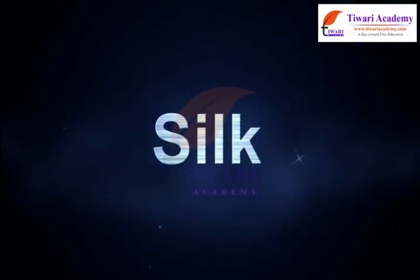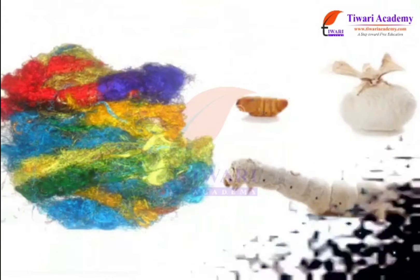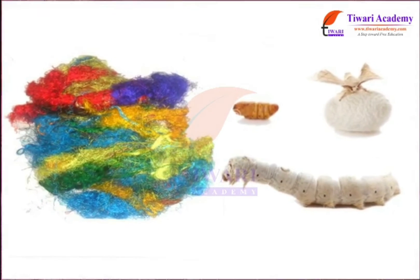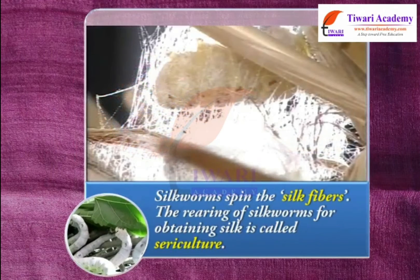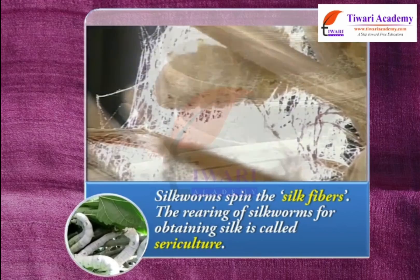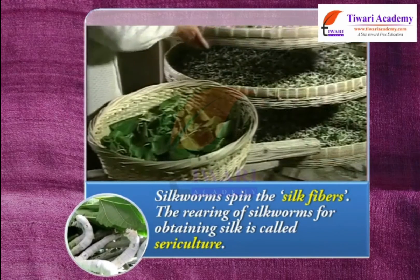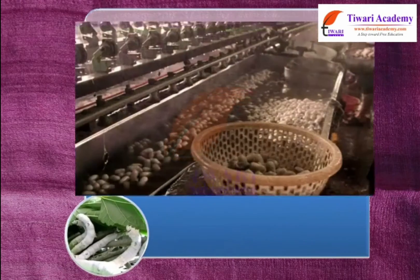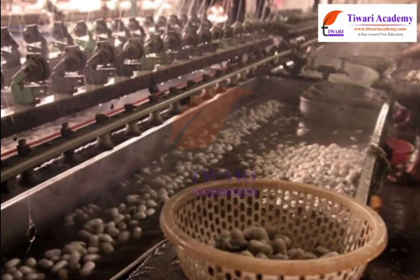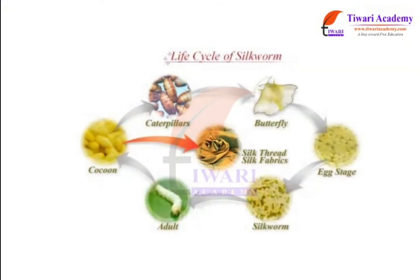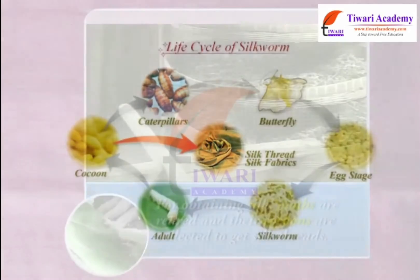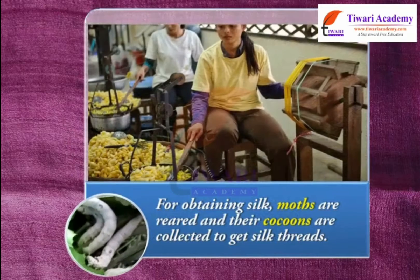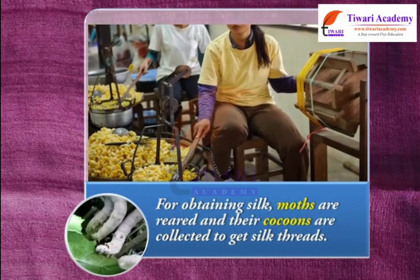Silk fibers are also considered animal fibers. Silkworms spin the silk fibers. The rearing of silkworms for obtaining silk is called sericulture. Before discussing the process of obtaining silk, it is necessary to know the interesting life history of the silk moth. For obtaining silk, moths are reared and their cocoons are collected to get silk threads.